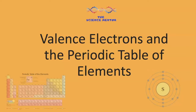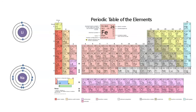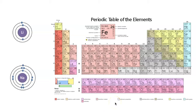Hi, it's Dr. Williams, and today we're going to talk about valence electrons and how to use the periodic table to determine them. Valence electrons are the electrons in the outermost energy level of an atom, and the number of valence electrons in an atom can tell us a lot about that atom's chemical properties.